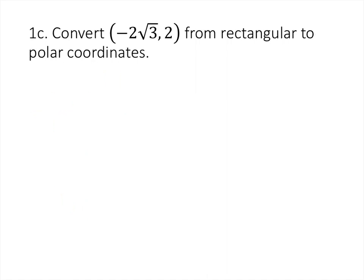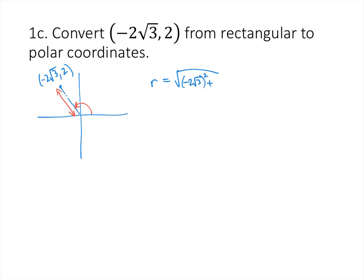Converting (-2√3, 2) from rectangular to polar. That point is in quadrant 2. The distance r is the square root of (-2√3) squared plus 2 squared. (-2√3) squared works out to be 12, and 2 squared is 4, so that's the square root of 16, which is 4. So the radius, the distance from the origin, is 4.